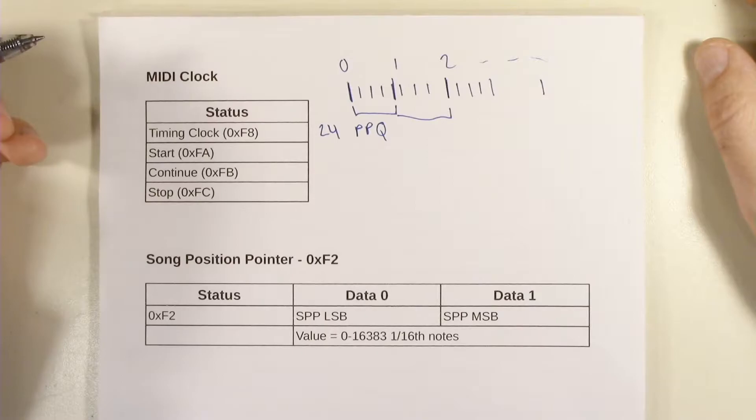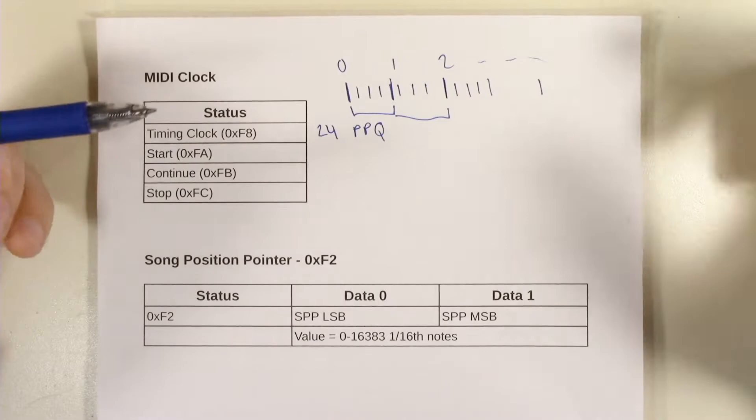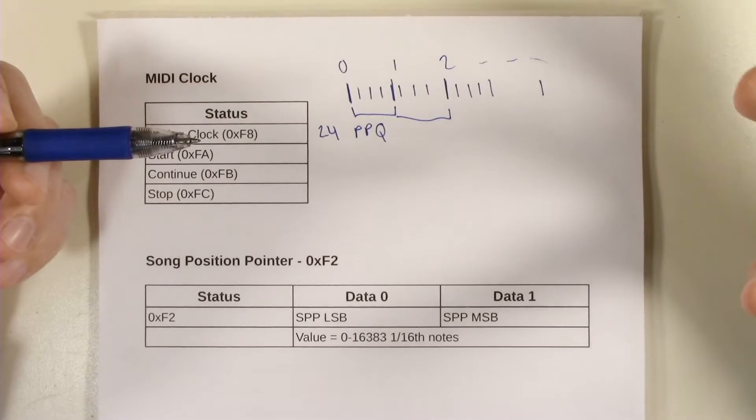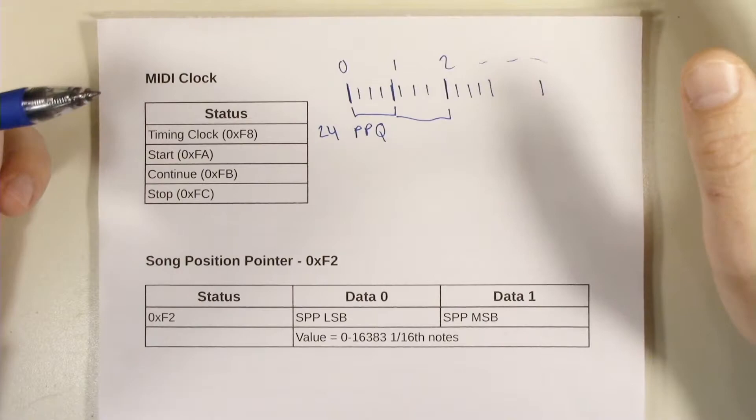MIDI clock is designed so that you normally send these pulses all the time even when the sequencer is not running so that the receiving side has a chance to get locked onto these main pulses and to upsample or develop its higher frequency clocks inside that it's going to use for very fine control of note lengths and things like that.